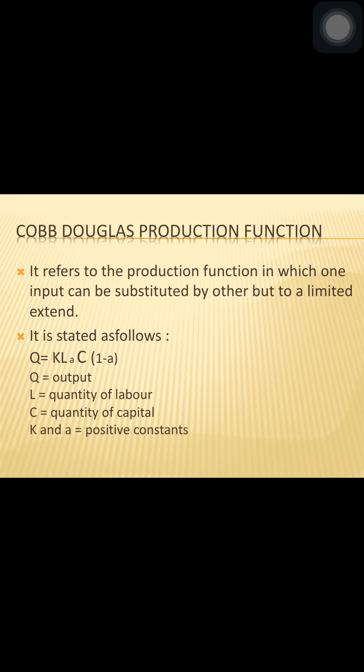Paul H. Douglas and C.W. Cobb of the USA studied the production of the American manufacturing industries and formulated a statistical production function. It is popularly known as the Cobb-Douglas production function. The Cobb-Douglas production function refers to a production function in which one input can be substituted by another but to a limited extent.